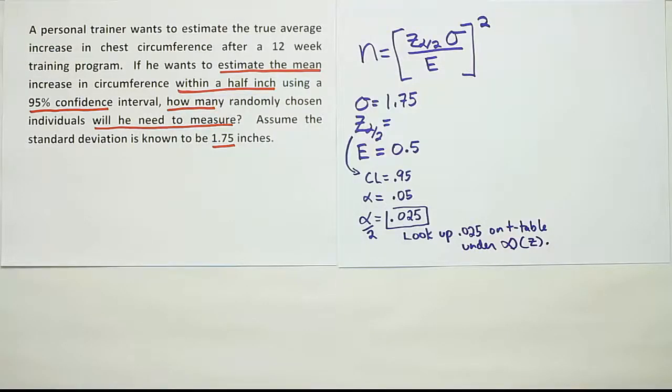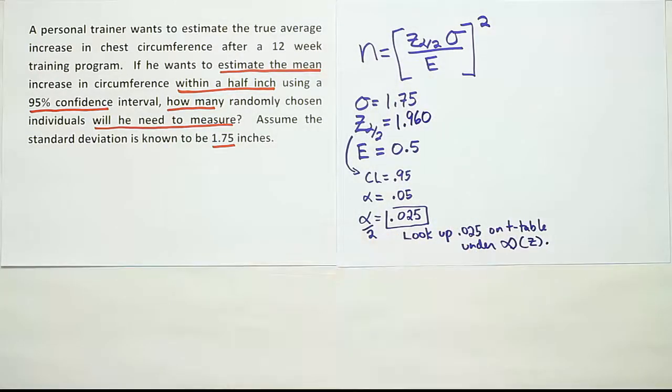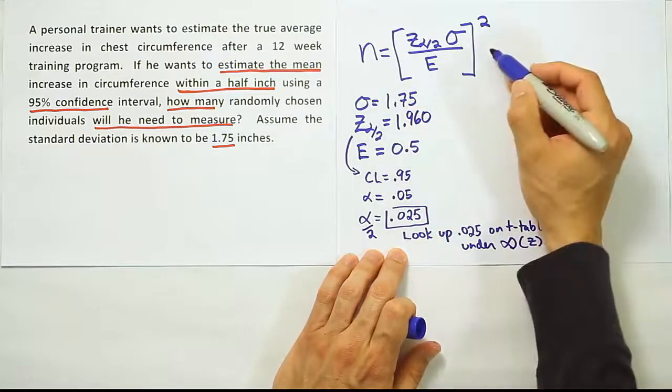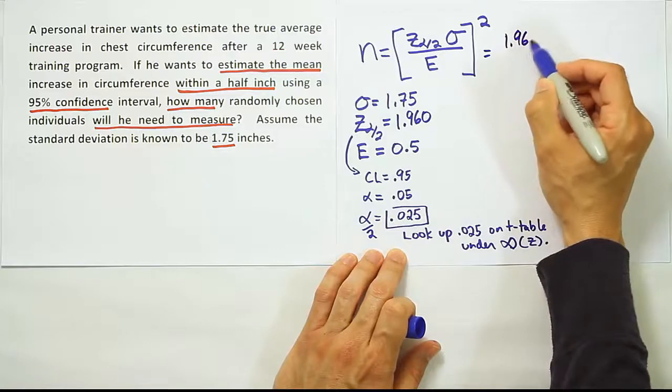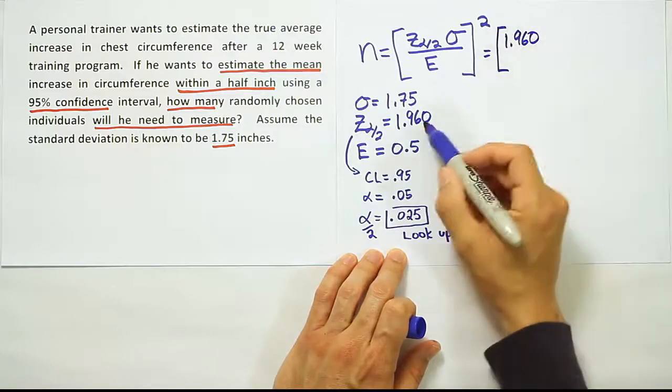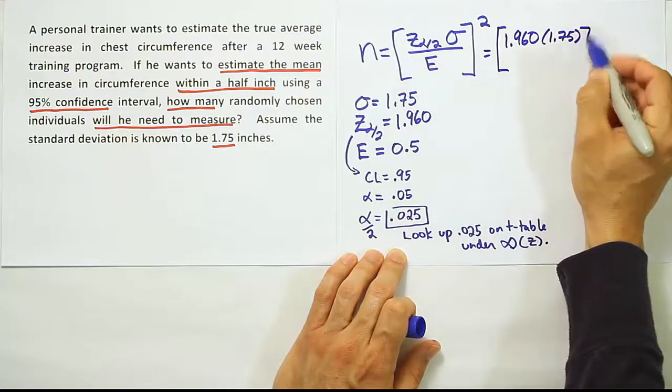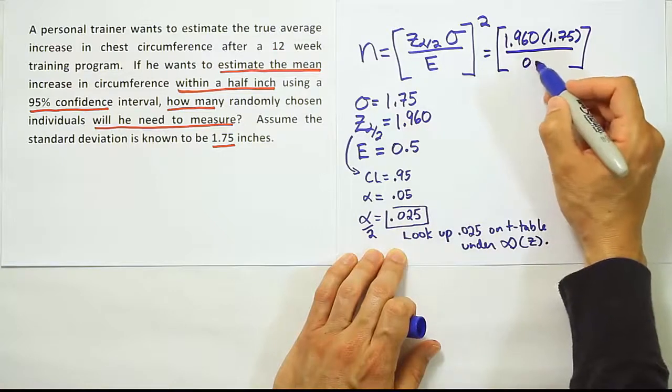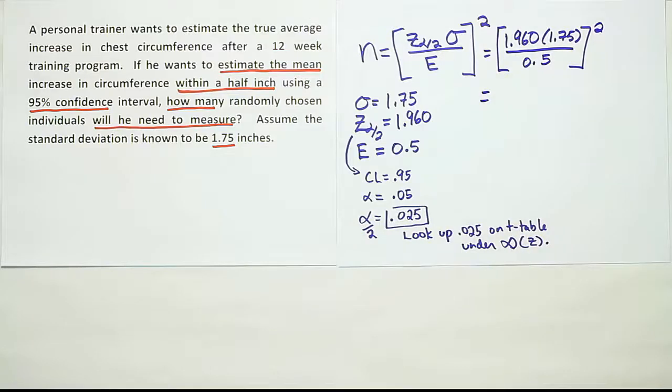The z alpha divided by 2 value turns out to be 1.960. With those numbers we've collected, we're going to plug them into our formula. The z alpha divided by 2 number is 1.960, the standard deviation is 1.75, then divide by the error 0.5, square that, and that'll give you your final answer.